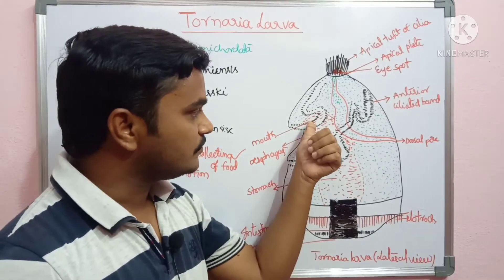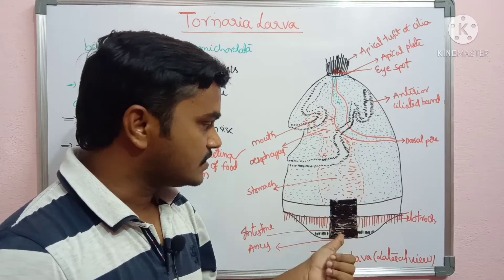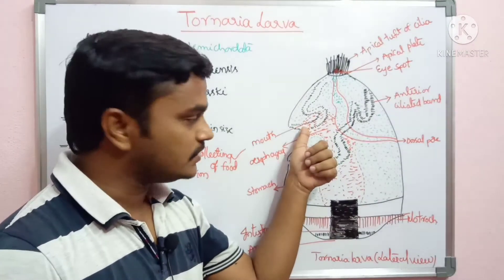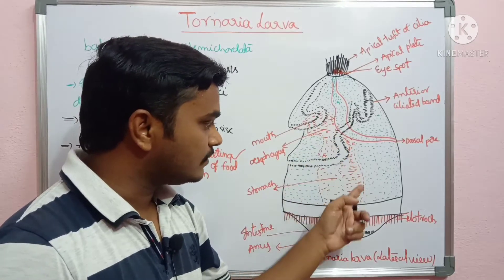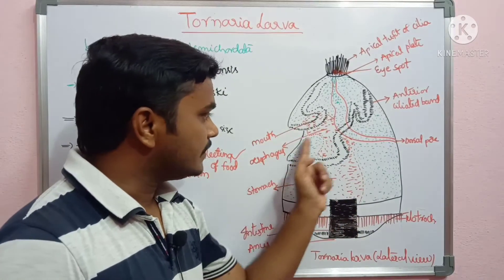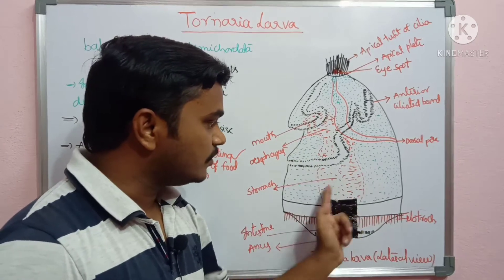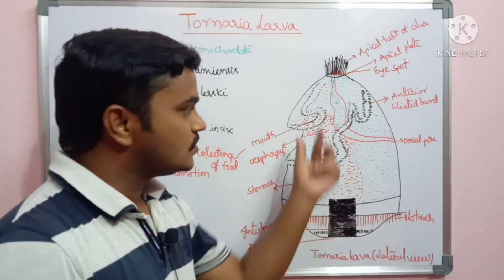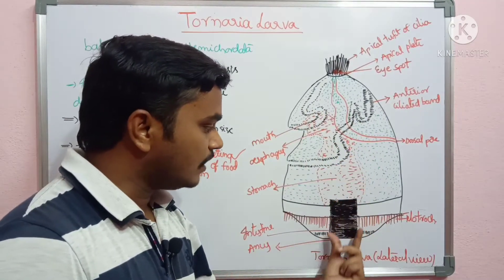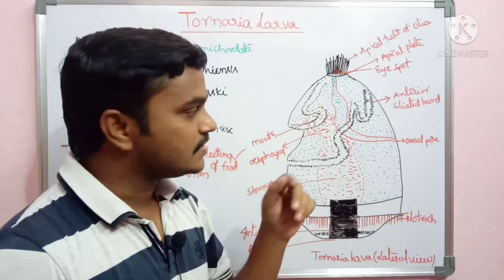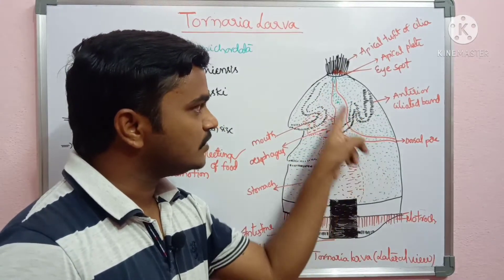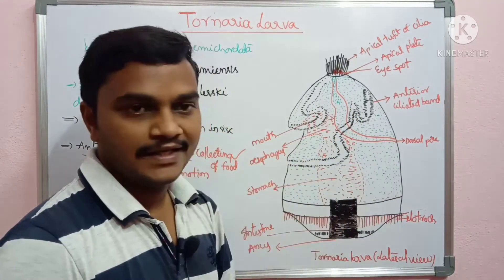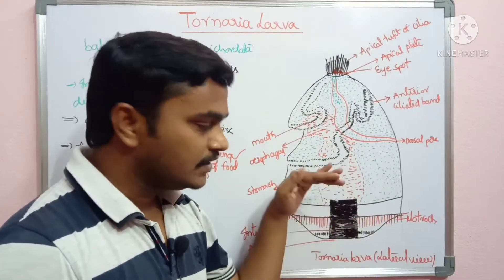So the parts present include the apical plate, apical tuft, and eye spots. The mouth is present in the ventral region. The gut region consists of the mouth, esophagus, stomach — which is the bulb-shaped area — and the intestine, which opens as an anus. Along with that, there is a dorsal sac, also called water sac, present in the dorsal region.